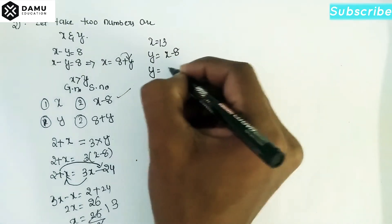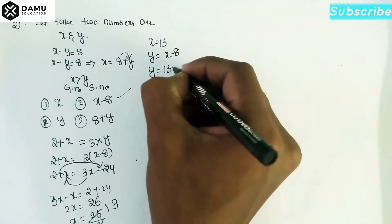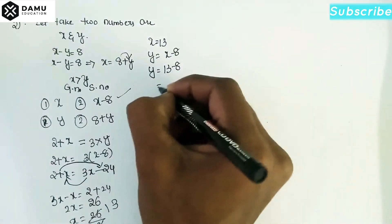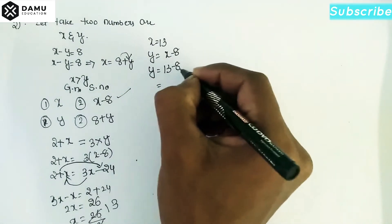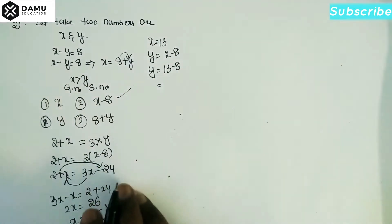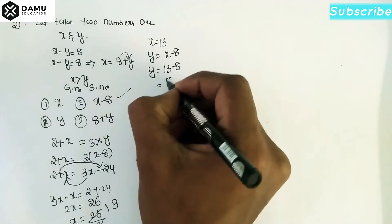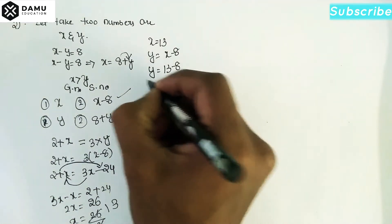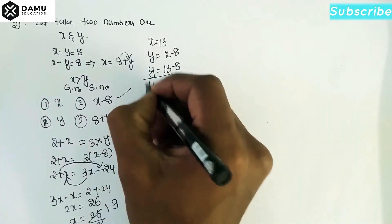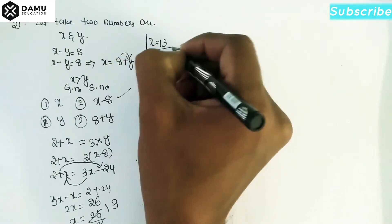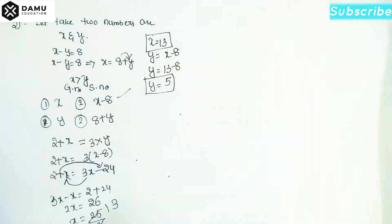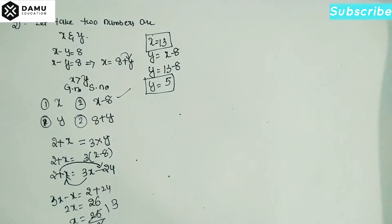Then x equals 26 divided by 2, so x equals 13. Then y equals x minus 8, that is y equals 13 minus 8, which gives y equals 5. So x equals 13 and y equals 5.